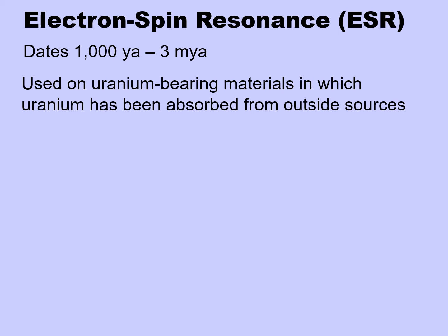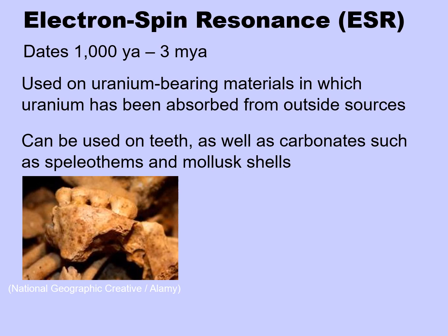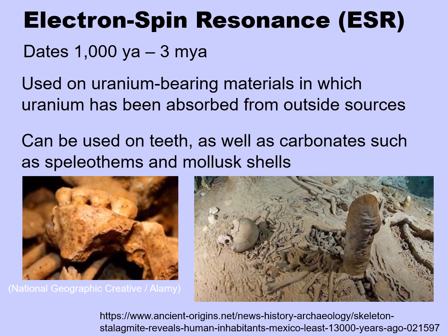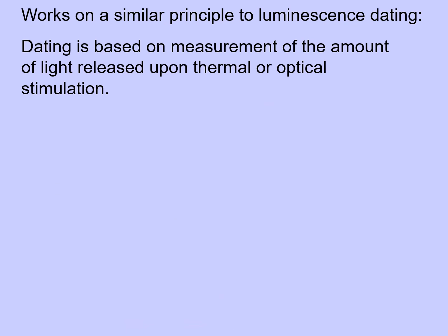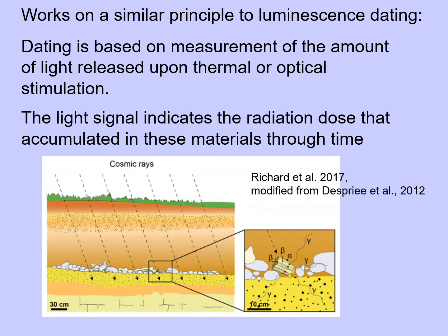The fourth type of absolute dating for fossil human sites is electron spin resonance, or ESR. It can date objects between 1,000 years old to 3 million years old. It's used on uranium-bearing materials in which uranium has been absorbed from outside sources. It can be used on teeth — which is a good thing because teeth are the hardest bone in the human body and the most likely fossil remains of humans to be found — but also on carbonates such as speleothems and mollusk shells. It works on a principle similar to luminescence dating, where dating is based on measurement of the amount of light released upon thermal or optical stimulation, indicating the radiation dose that accumulated in these materials through time.